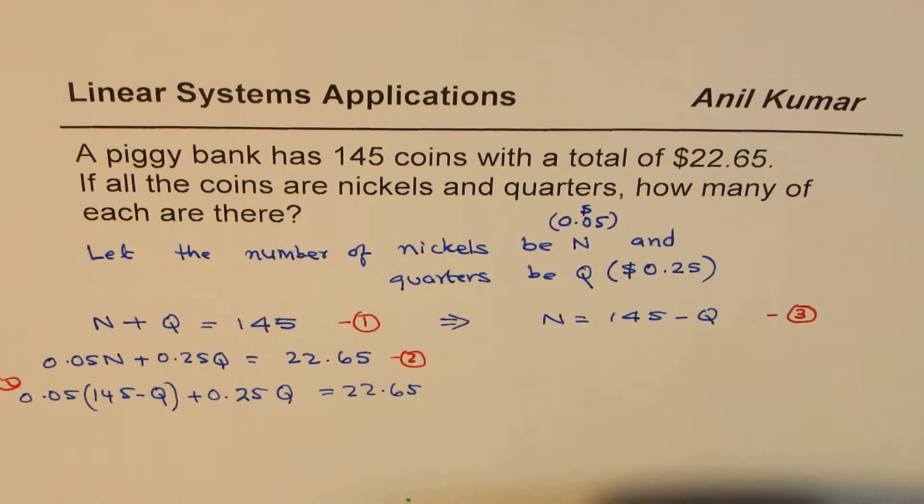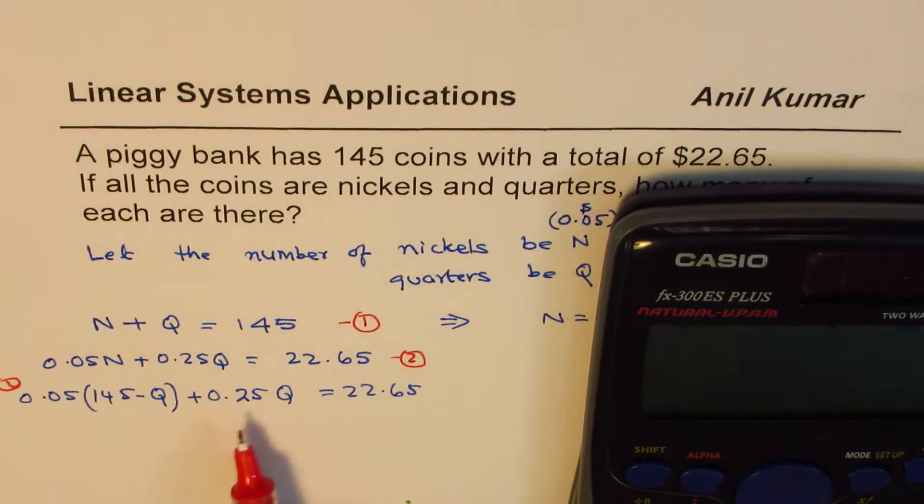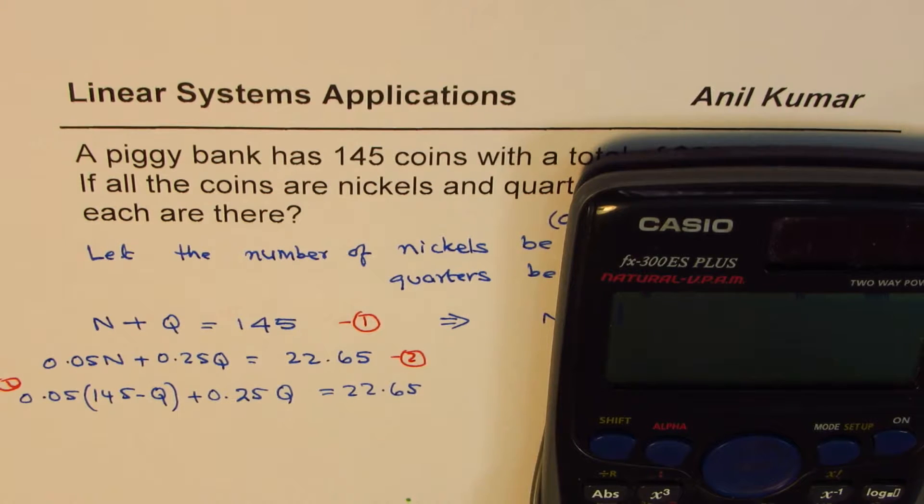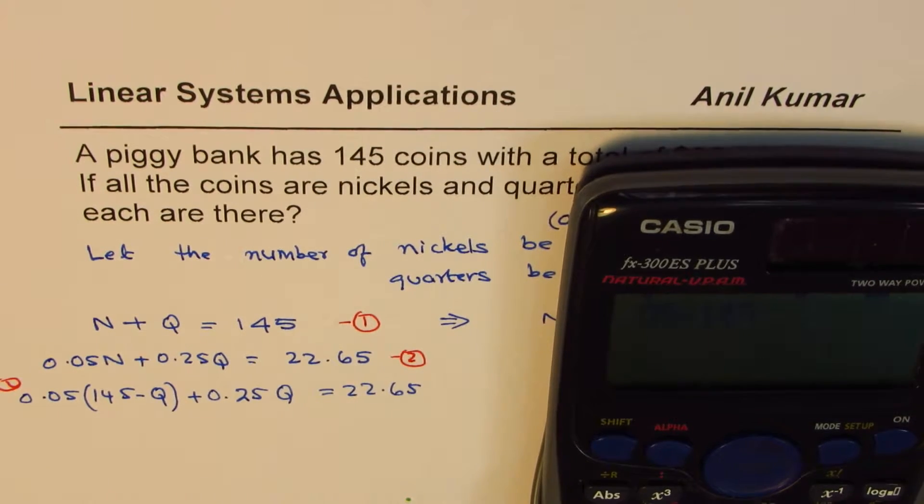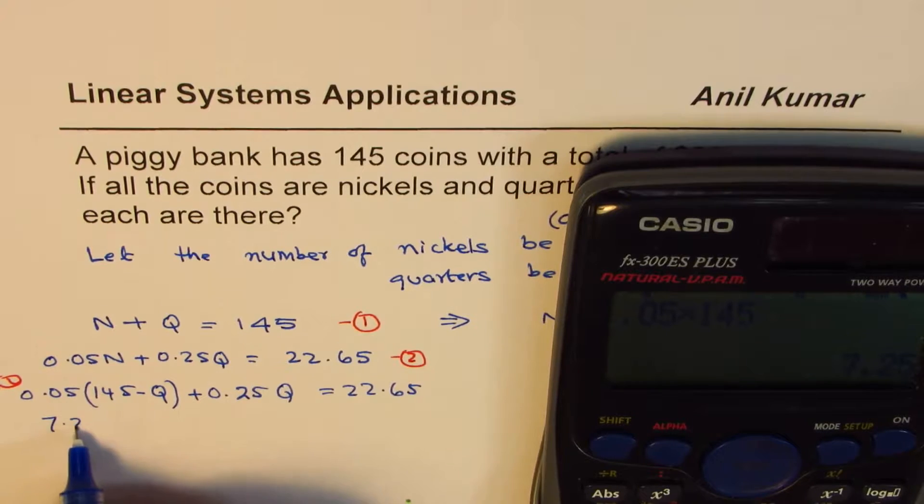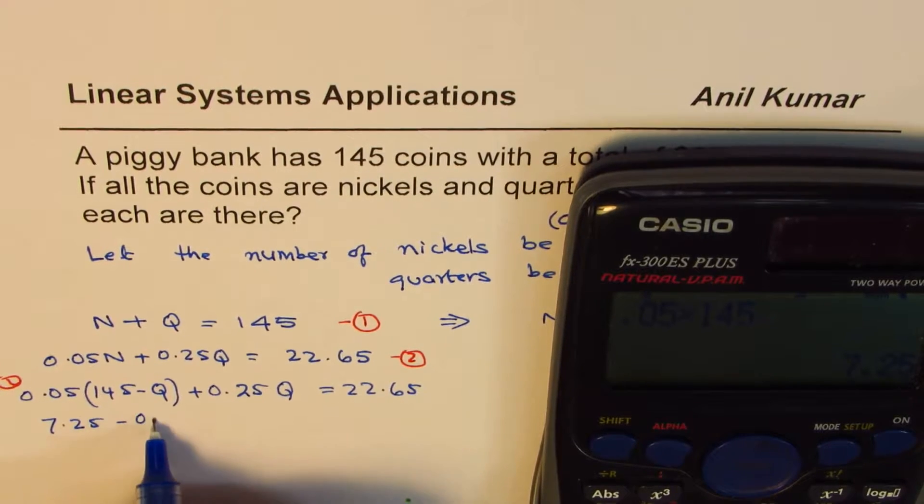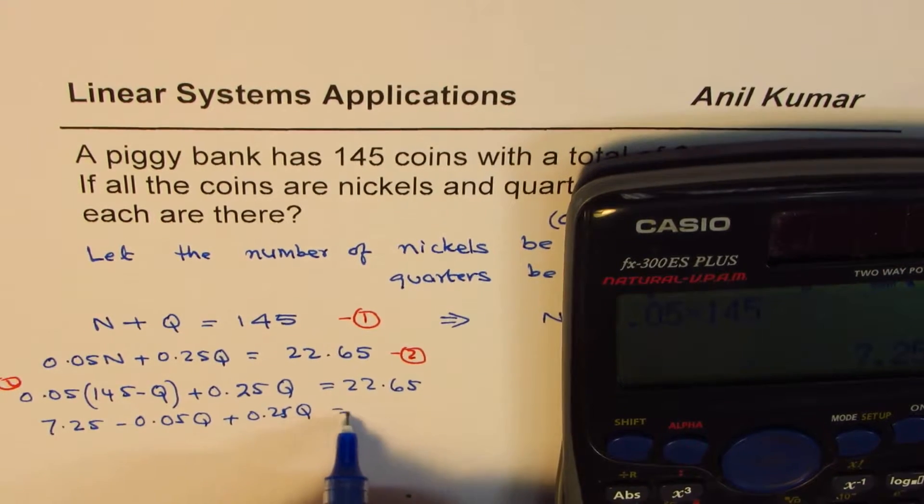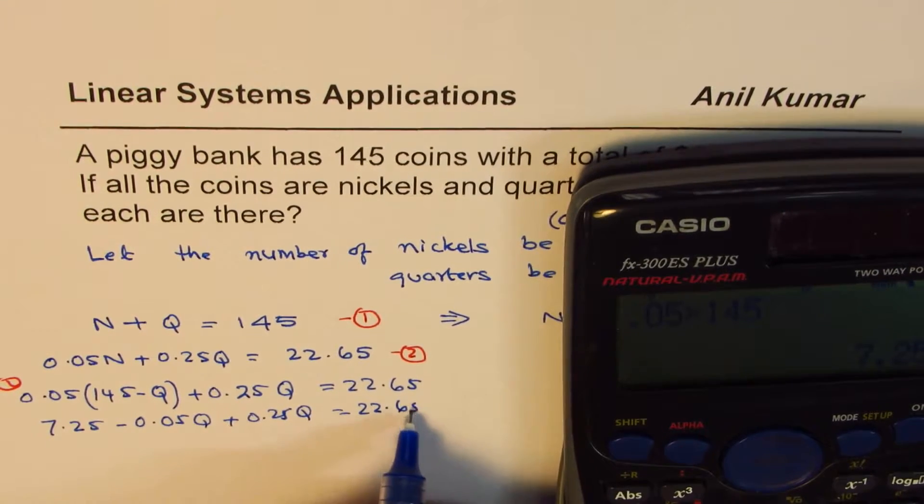Now we can multiply, open the brackets, simplify by combining the like terms and solve. So let's do it. So 0.05 times 145 is equal to, let's do it in decimal, 7.25.